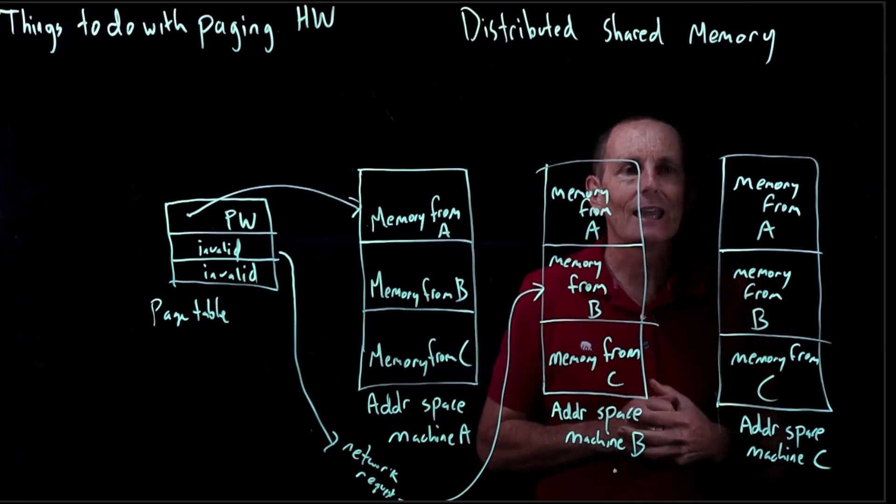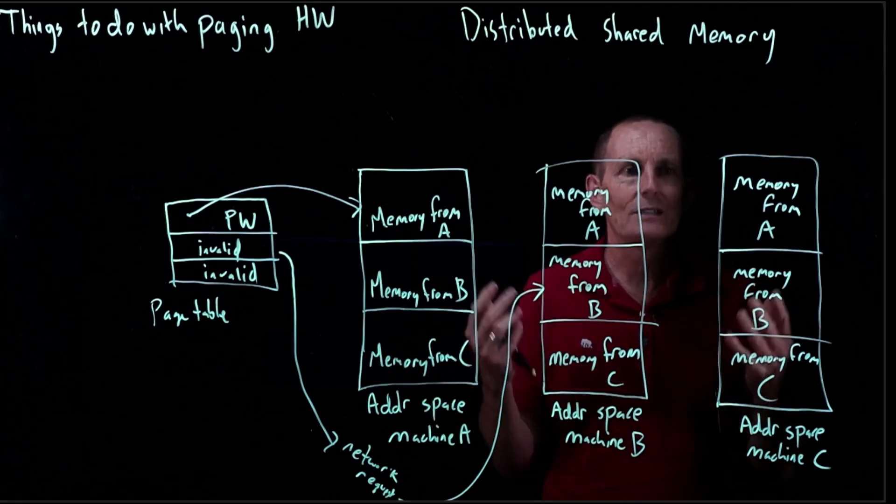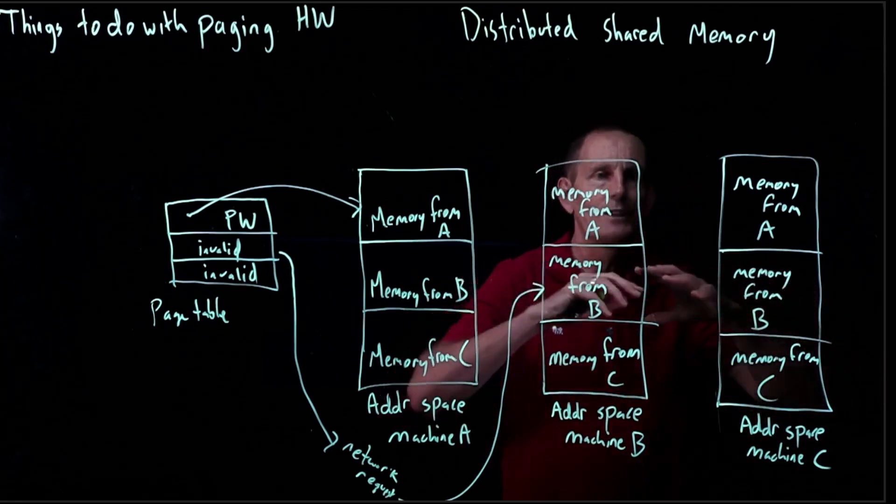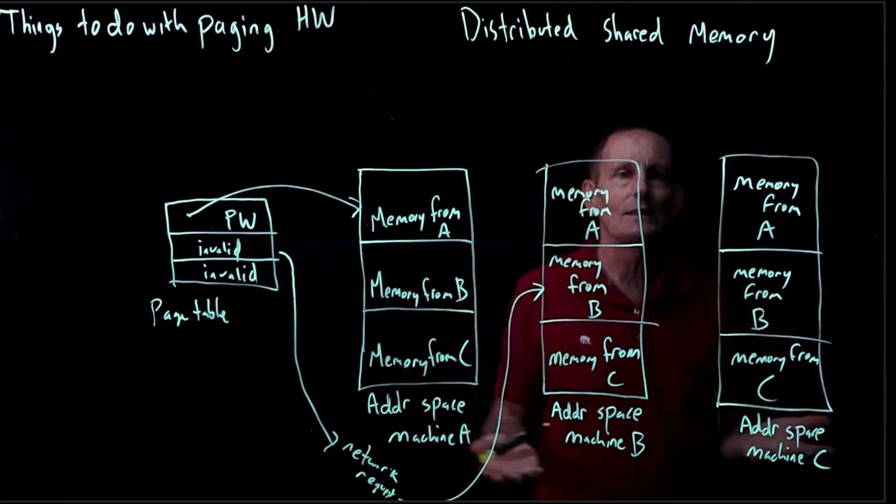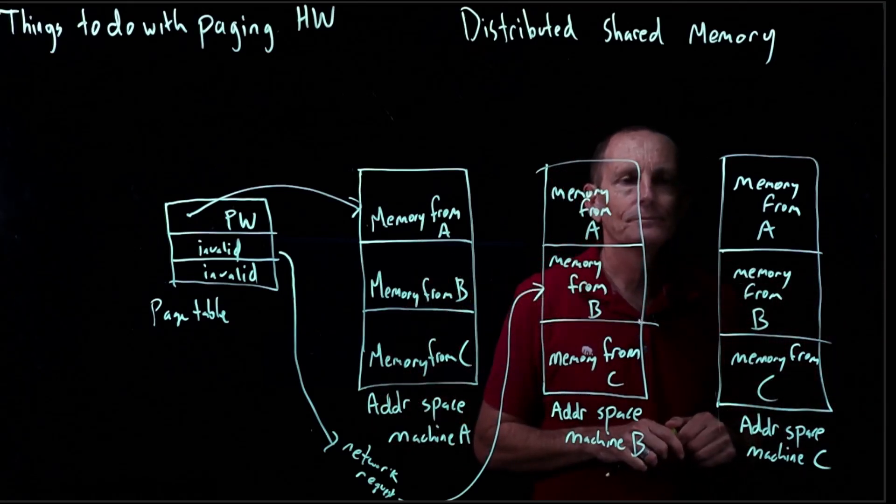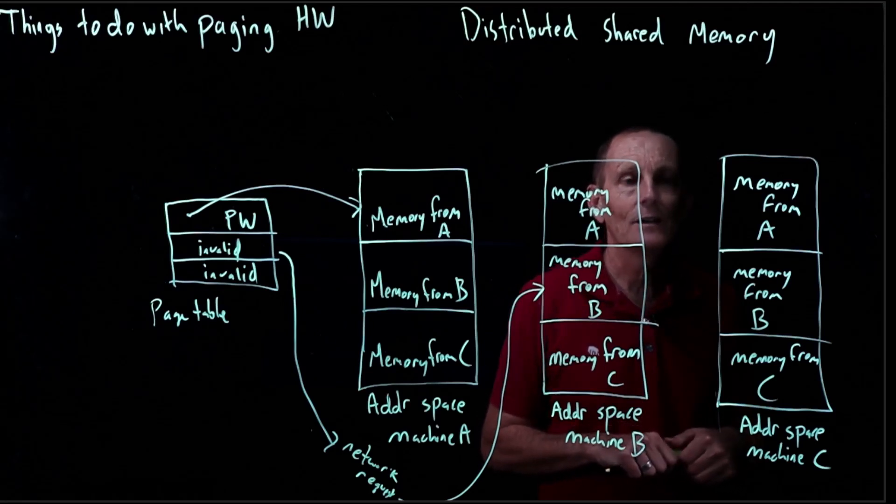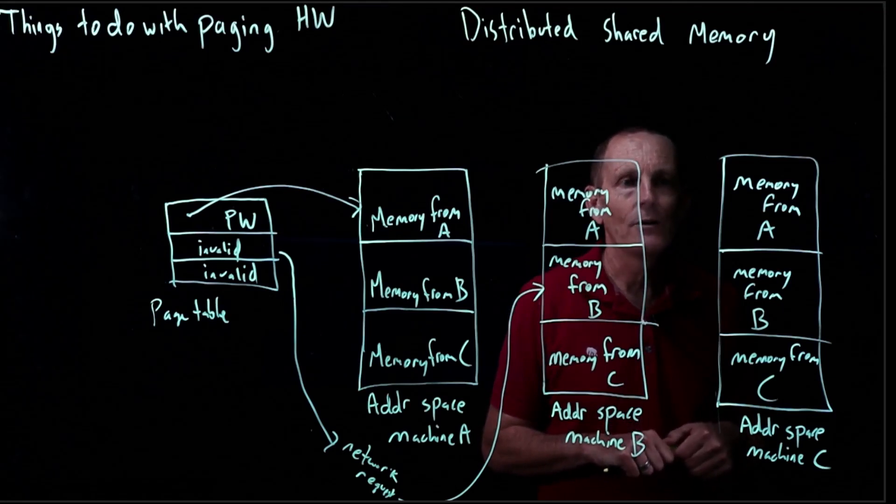So it's not unlike cache lines in a multi-processor where there are multiple processors all trying to have this shared understanding of what some values are. That's one use of paging hardware. This is not very common, but it's something that can be done and it would be really hard without it.